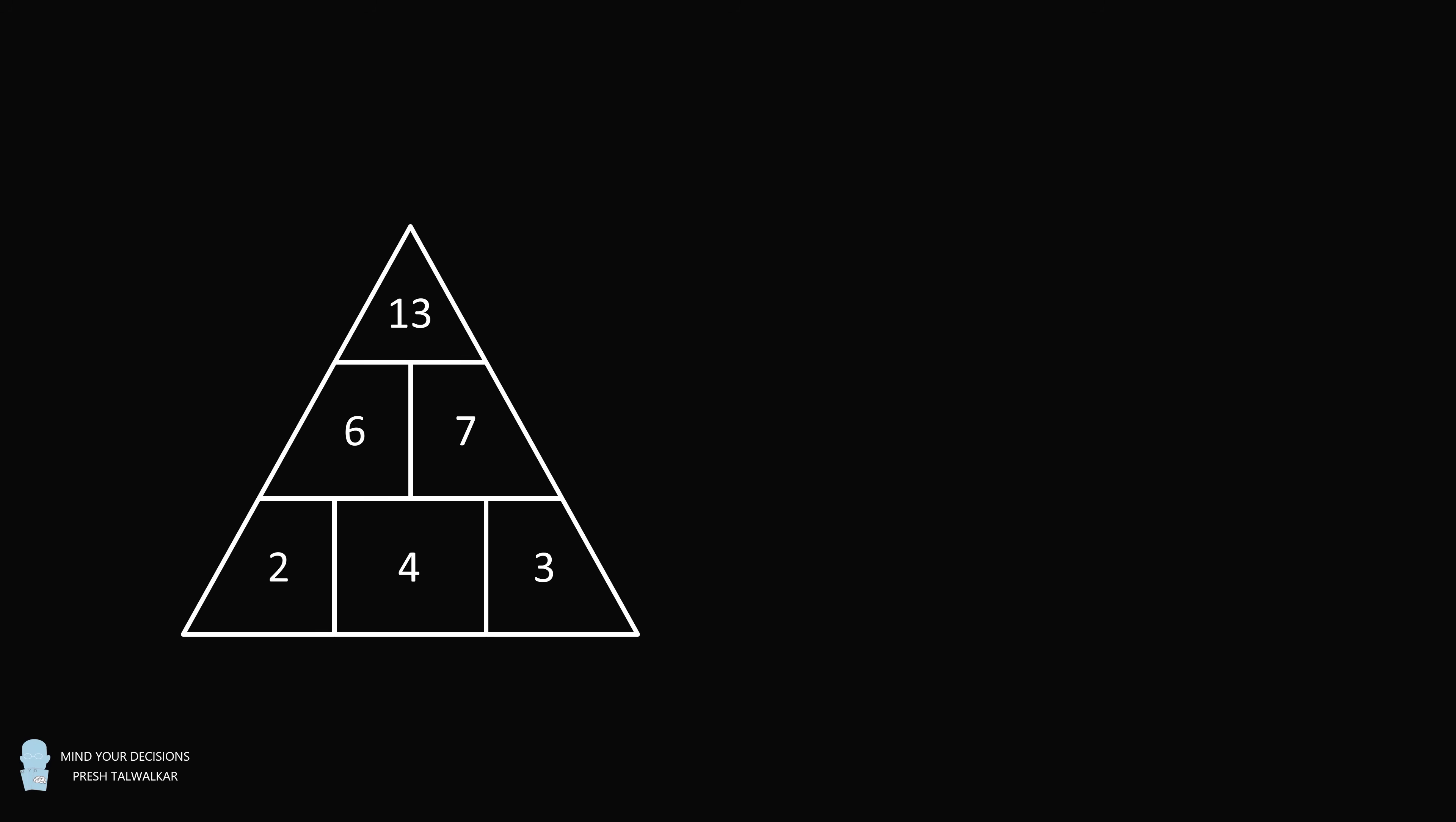The number pyramid obeys the following rule: each number in the middle and top rows is the sum of the two numbers below it. We now have another number pyramid. The top row is 40, the middle row is blank and heart, and the bottom row is 7, star, and 9. The question is, what is star plus heart equal to?